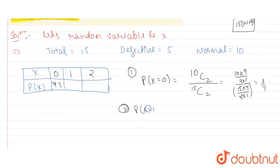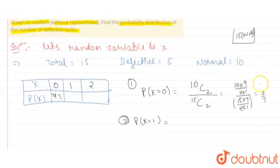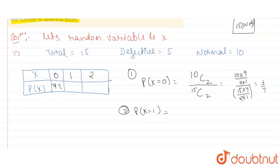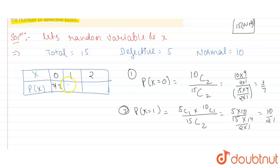P(X=1) means one bulb is defective — we selected one bulb from defective and one bulb from normal, and total bulbs are 15. So P(X=1) = 5C1 × 10C1 / 15C2, because both bulbs are selected from the same bag containing 15 bulbs total. That equals 5×10 / (15×14/2) = 50/105 = 10/21.